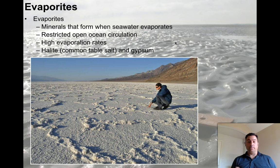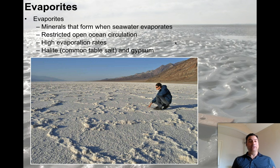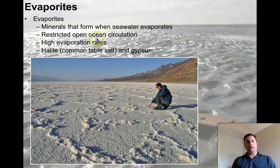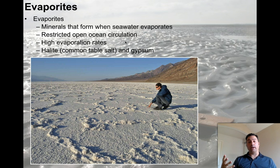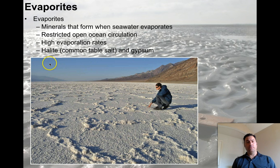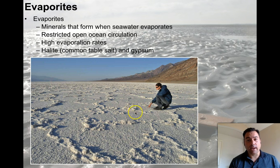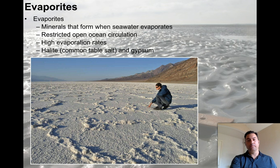Another cool mineral type are evaporites — when you take seawater and evaporate it away, what's left are all the minerals that make water salty. You basically precipitate these salts. They usually form in restricted open ocean circulation — where it's difficult for the ocean to constantly bring new fresh water into an area. As a consequence, extreme evaporation raises the salinity and you start getting deposition of salts. The most common forms are halite, which is common table salt, and gypsum. This example is from Death Valley but it's the same mineral as halite.